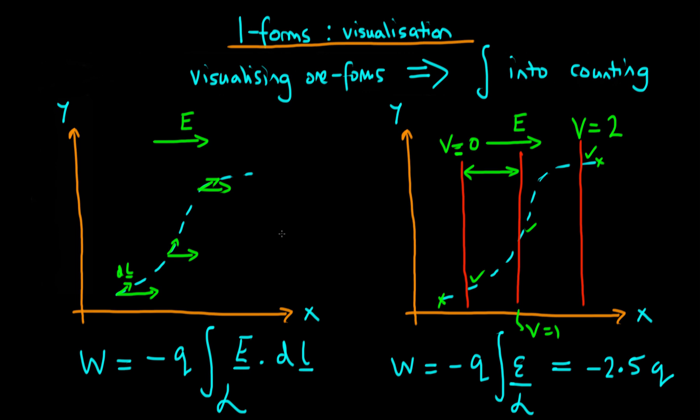So what functional form does our one-form here actually take? Well we can work it out. Essentially because our electric field is only in the x direction, our one-form is just given by e_x, the magnitude of the electric field, times the differential element dx. And the idea is that if we actually carry out this operation of integrating a one-form, essentially all we need to remember is that we're just counting the number of surfaces that our line actually passes through.